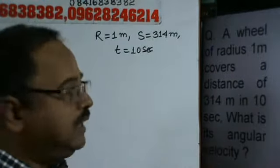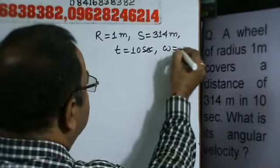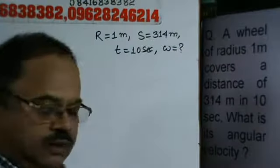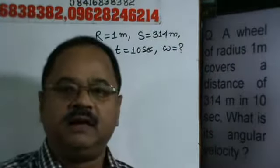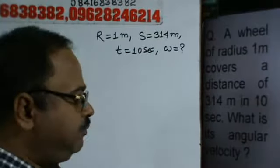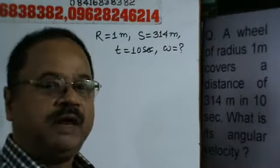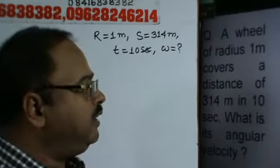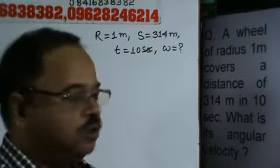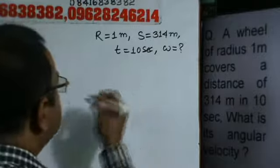Now, what is the angular velocity? So omega will be equal to... Just as we know that in case of pure rolling, in case of motion of a wheel, we have V is equal to r omega. So first we have to calculate the velocity of the body.